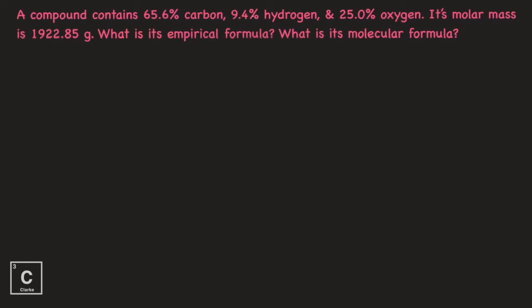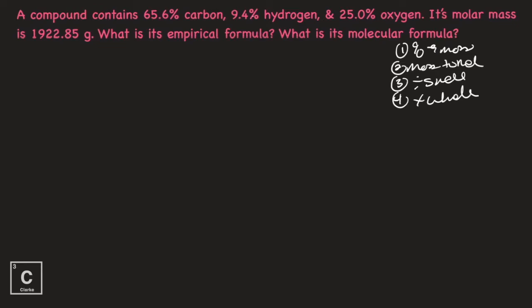Number four: a compound contains 65.6% carbon, 9.4% hydrogen, and 25.0% oxygen. Its molar mass is 1,922.85 grams. What is its empirical formula? What is its molecular formula? This problem is going to get a little bit long because we've got three elements and we're finding both molecular and empirical. Let's sketch out those steps: percent to mass, mass to mole, divide by small, multiply till whole. This problem does start with percents, but changing percents to mass really isn't a step — we're just going to rewrite those numbers as grams. So 65.6 grams of carbon, 9.4 grams of hydrogen, and 25.0 grams of oxygen.